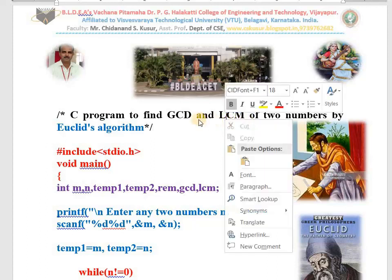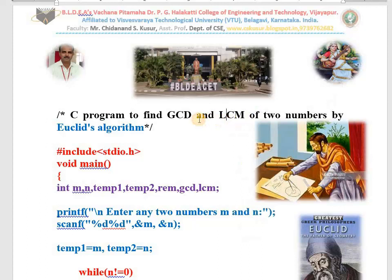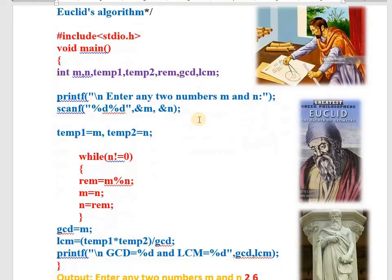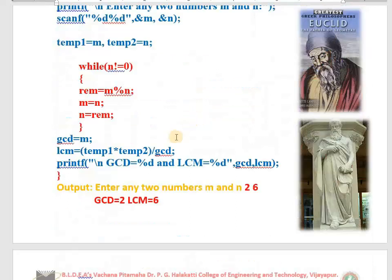Whenever we run the program we get the output like this. Whenever we run the software, on the screen we get this message: enter any two numbers M and N to find GCD and LCM. If I give the inputs like 2 and 6, I get the output GCD as 2 and LCM as 6.